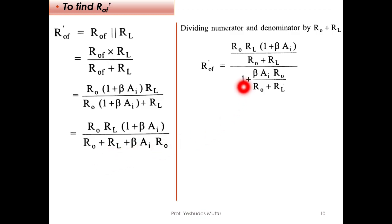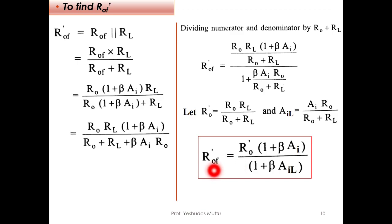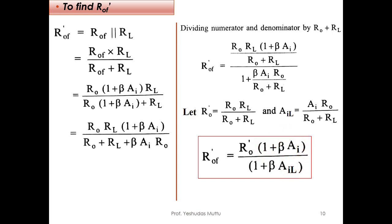To find Rof', compute Rof || RL. Substituting Rof = Ro(1 + β·Ai), expanding and dividing by (Ro + RL), let Ro' = Ro·RL/(Ro + RL) and Ail = Ai·Ro/(Ro + RL). The final expression is Rof' = Ro'·(1 + β·Ai) / (1 + β·Ai), showing both numerator and denominator contain (1 + β·Ai).